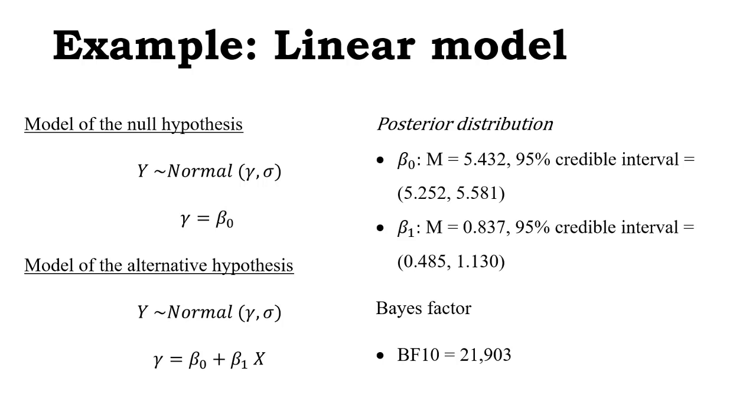The alternative hypothesis model says that y is distributed normally with a mean of gamma and a standard deviation sigma. But instead of saying that gamma equals beta 0, we say gamma equals beta 0 plus beta 1 times x. X here is whether the participant is in the intervention group, which will have a 0.5, or in the control group, which JASP gives minus 0.5. If we have 0.5 versus minus 0.5, the difference is 1. There are different ways of parameterizing the analysis, and the way that JASP does it is with 0.5.